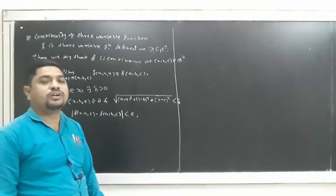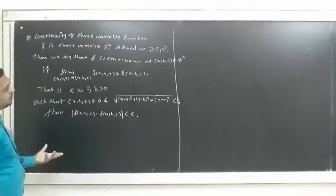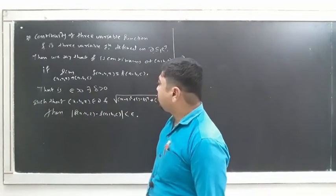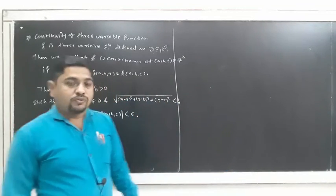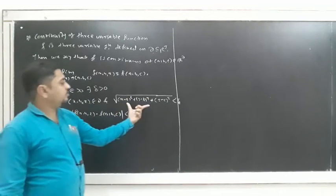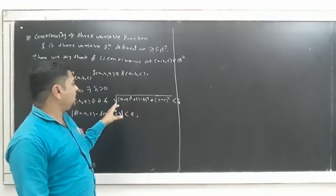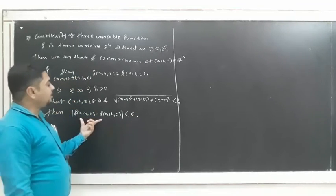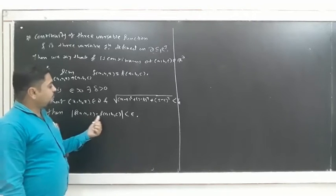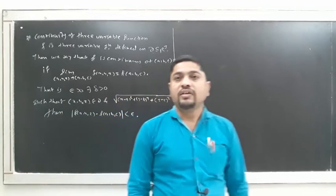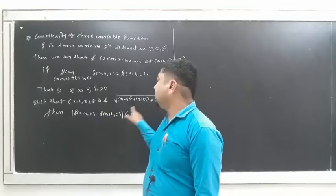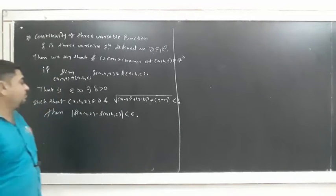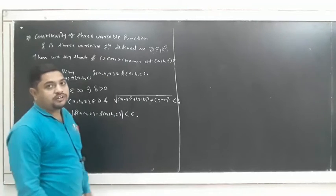Same definition — we just convert it to three variables. The geometric meaning is similar to the two-variable case: if you make the distance between the point (x, y, z) and (a, b, c) very small, then the distance between f(x, y, z) and f(a, b, c) is also very small. We will take some examples on this.